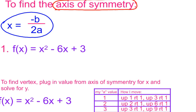To find the axis of symmetry, I use the equation x = -b / (2a). Look at number one: f(x) = x² - 6x + 3. The a value is 1, b is negative 6, and c is 3. When I substitute into the formula, x equals the opposite of b — which is positive 6 — divided by 2 times a, which is 1.